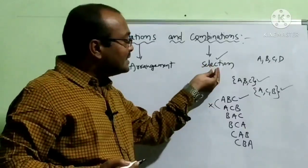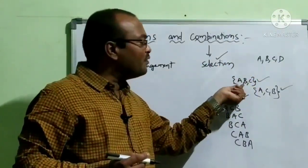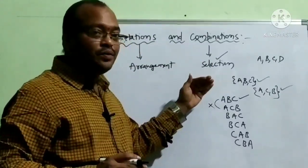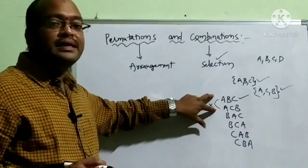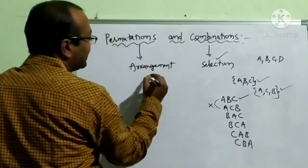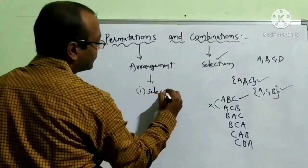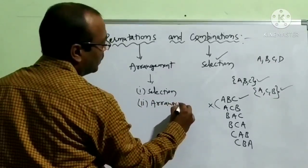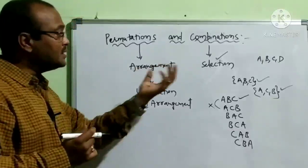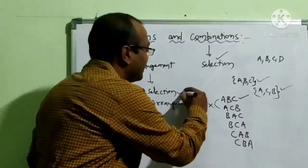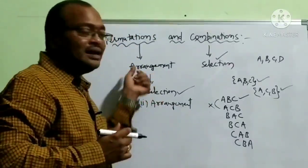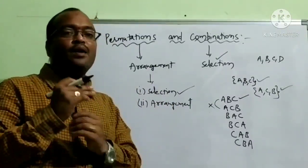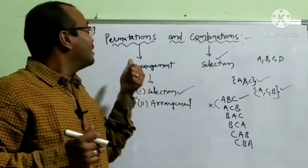So, selection means selecting the element. But to arrange different elements, we first select and then arrange them differently. Permutation requires: first, we do a selection, and after that, we do an arrangement. When a problem is given, we need to know whether to apply selection or arrangement.